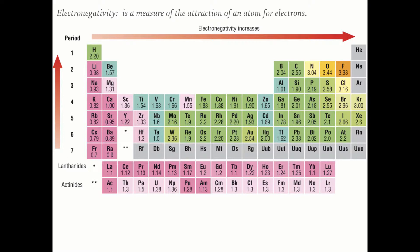The electronegativity of an atom is a measure of its attraction for electrons. As you move across the periodic table, the number of protons increases, which means that electronegativity increases as well. As you move down the periodic table, atoms become bigger because they have more principal energy levels, so electronegativity decreases. Moving up and to the right increases electronegativity, making fluorine the most electronegative atom.